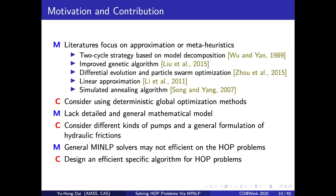Our motivation consists of three parts. The first one is most of the literatures about HOP problems focus on approximation or meta-heuristic methods, like genetic, particle swarm algorithms, etc. We consider using some deterministic global optimization methods, like branch and bound framework to solve this problem. The second one is we consider a more detailed and general mathematical model for the HOP problem. The last one is general non-convex MINLP solvers may not be efficient on this problem. So we would like to design a specific and more efficient algorithm for HOP problems.